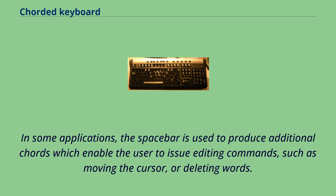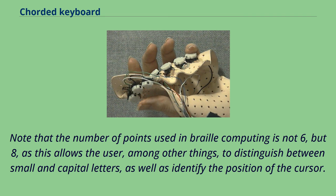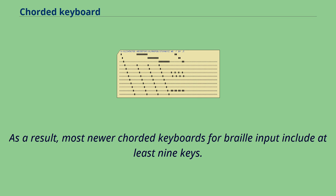The number of points used in Braille computing is not six but eight, as this allows the user to distinguish between small and capital letters as well as identify the position of the cursor. As a result, most newer chorded keyboards for Braille input include at least nine keys.